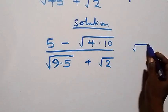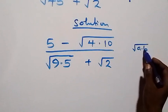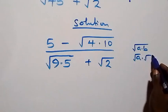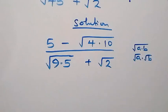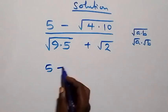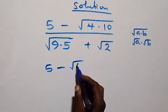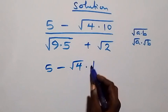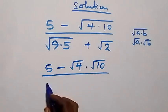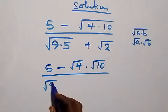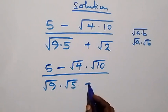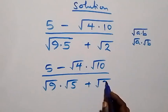Recall that when we have root(a times b), this is the same thing as root a times root b. So here, the numerator becomes five minus root four times root ten, then divided by root nine times root five, then plus root two.